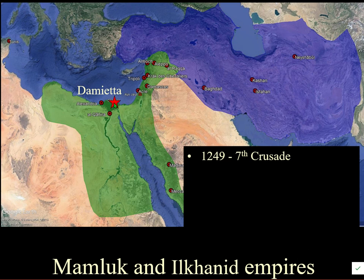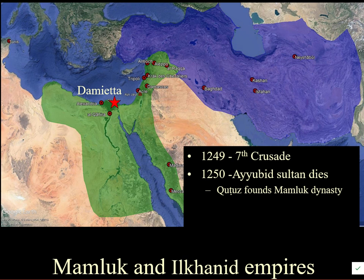The crusaders attacked Egypt, besieging Damietta. The leaders of the defense of Egypt were troops recruited from the steppes known as Mamluks. One of the foremost was a chap called Baybars. These people fought hard to drive off the crusaders, which coincided with problems for the Ayyubids. You might remember Salah ad-Din — the last Ayyubid sultan of Egypt dies in 1250 and is replaced by one of these Mamluks, a chap called Qutuz.